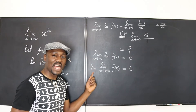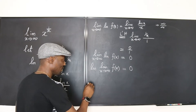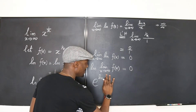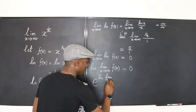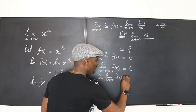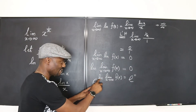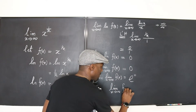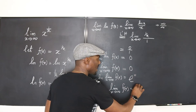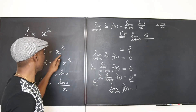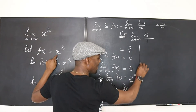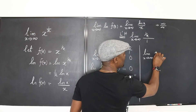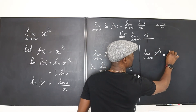To get rid of the natural log, I take e of both sides: e to the ln of [the limit as x goes to infinity of f(x)] equals e to the 0. The e cancels the natural log, leaving the limit as x goes to infinity of f(x) equals e to the 0, which is 1. Since f(x) is x to the 1 over x, the limit as x goes to infinity of x to the 1 over x equals 1.